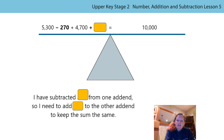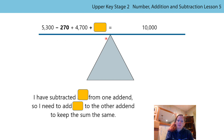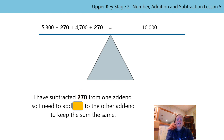I wonder what the value of the numbers is that might be under those orange boxes. Pause the video if you want, have a go at saying the calculation out loud and saying the stem sentence out loud. When you're ready, press play again. We subtracted 270 from one addend, so we had to add 270 to the other addend. The balance has remained level, which means the sum of these numbers here must be equivalent to 10,000. I have subtracted 270 from one addend, so I need to add 270 to the other addend to keep the sum the same. Keeping the sum the same shows that the balance is level.